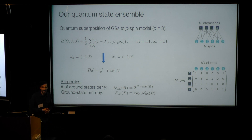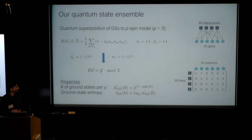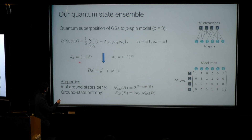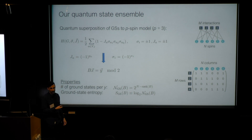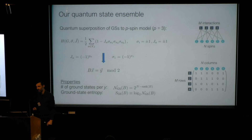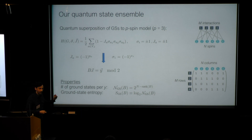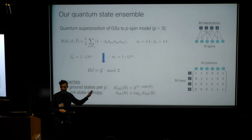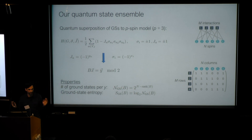This model is particularly nice because it allows us to find its ground states relatively easily. If we do a transformation from the J's and Sigmas to X and Y vectors, finding the ground states is equivalent to finding solutions of the system BX equals Y modulo 2. Some of you know this problem as XORSAT, and some also know it as LDPC codes — these are all equivalent.